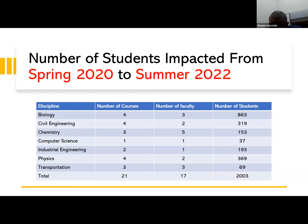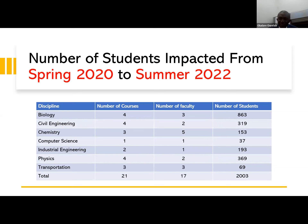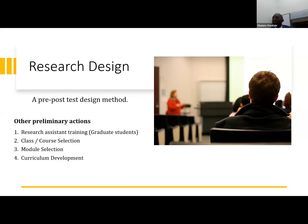Implementation started in spring 2020 and is now in its fourth year. A number of students were impacted from spring 2020 to spring 2022 — we are still gathering data for the current year. Across biology and other courses and faculty, we have impacted close to about 2,000 students. A majority are African-American minority students.